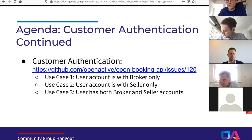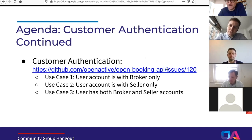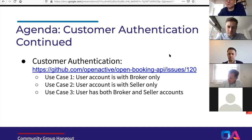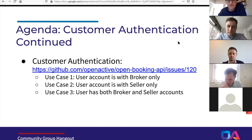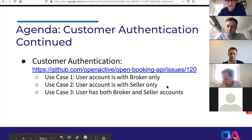I'll just go through a quick review of the three use cases we are discussing today. Use case one is that a user has an account with the broker — in the case of MCR Active, that would be MCR Active itself. Use case two is where the user account is with the seller only and there is no account with the broker — so that would be the leisure center. Use case three is where both accounts exist and there is some method whereby the broker authenticates the user to the account existing on the seller system.